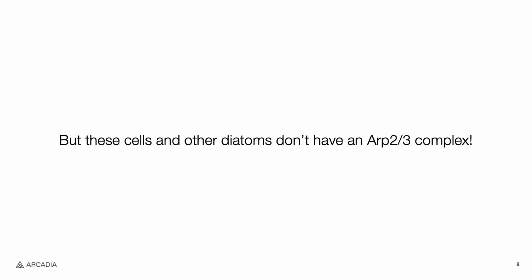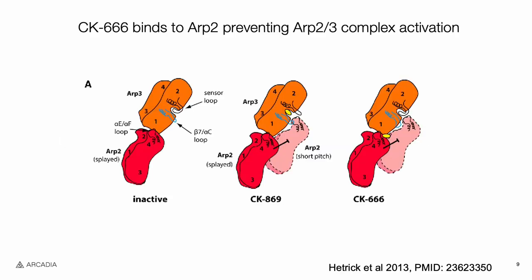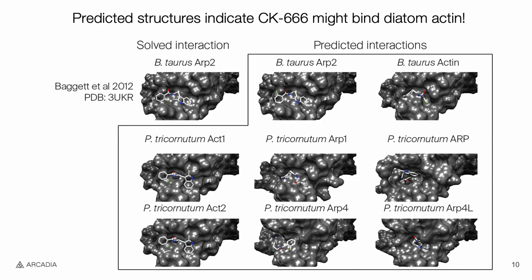Although these results were very exciting for us, they were also very confusing because CK666, which targets the ARP2-3 complex, ideally shouldn't have an effect on these cells because diatoms do not have an ARP2-3 complex. CK666 is a small molecule that binds to both ARP2 and ARP3 and prevents the conformational change needed to activate this complex. Because ARP2 is so similar to actin, we hypothesized that CK666 might be binding to diatom actins in the absence of an ARP2-3 complex.